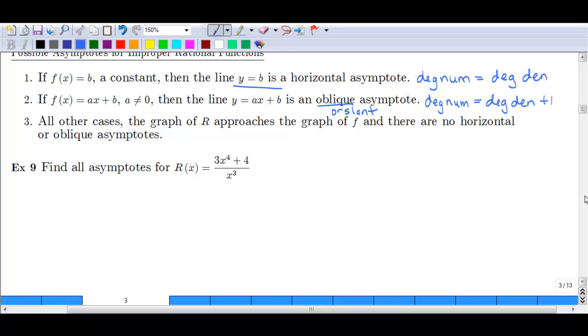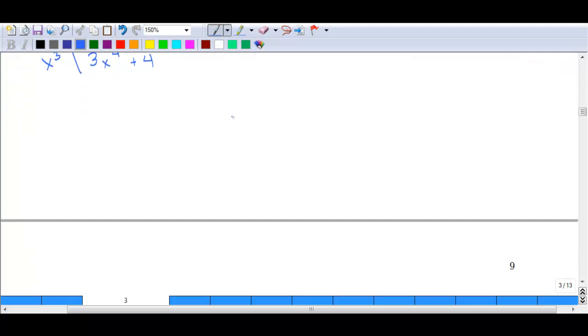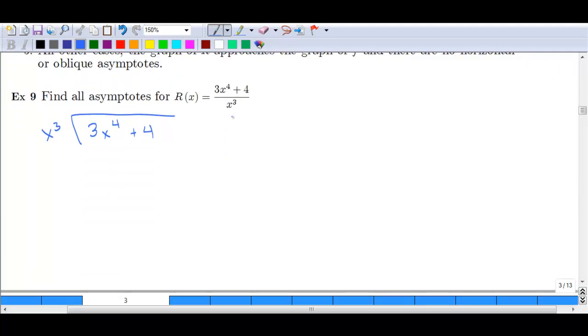We want to find all asymptotes for this function. Now there are different ways you can go about doing this. One way is to do long division, so let's just kind of review that real quick since this is a simple example. We've got 3x to the fourth plus 4 over x cubed. So first things first, we ask ourselves, what do we multiply x cubed by to get 3x to the fourth? Well, that's going to be 3x, so we end up with a 3x to the fourth. We subtract that. We get 0. We bring down our 4. We can't multiply x cubed by anything with a positive exponent and get 4, so this becomes our remainder. Or we can write it as the fraction 4 over x cubed.